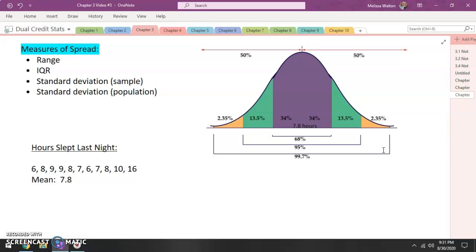Well this is a job for a calculator. We can do it by hand but it's very tedious. It's essentially subtracting 6 minus 7.8, squaring it to avoid negatives, adding all those up, dividing by a certain value. It's a very tedious process. So what we're going to do is we're going to allow a calculator to do the work.